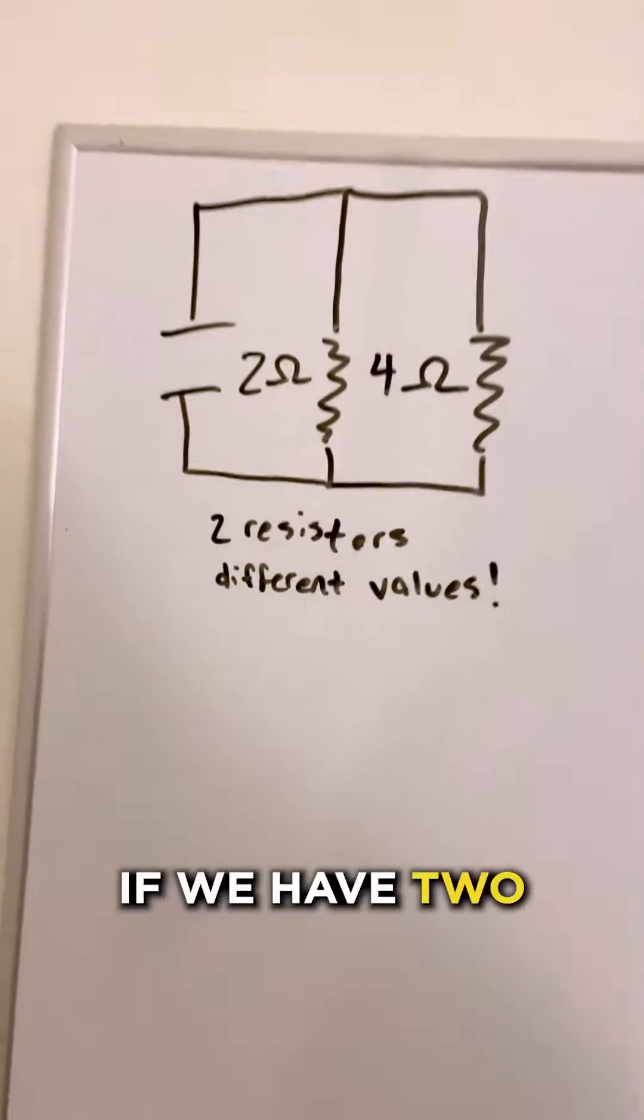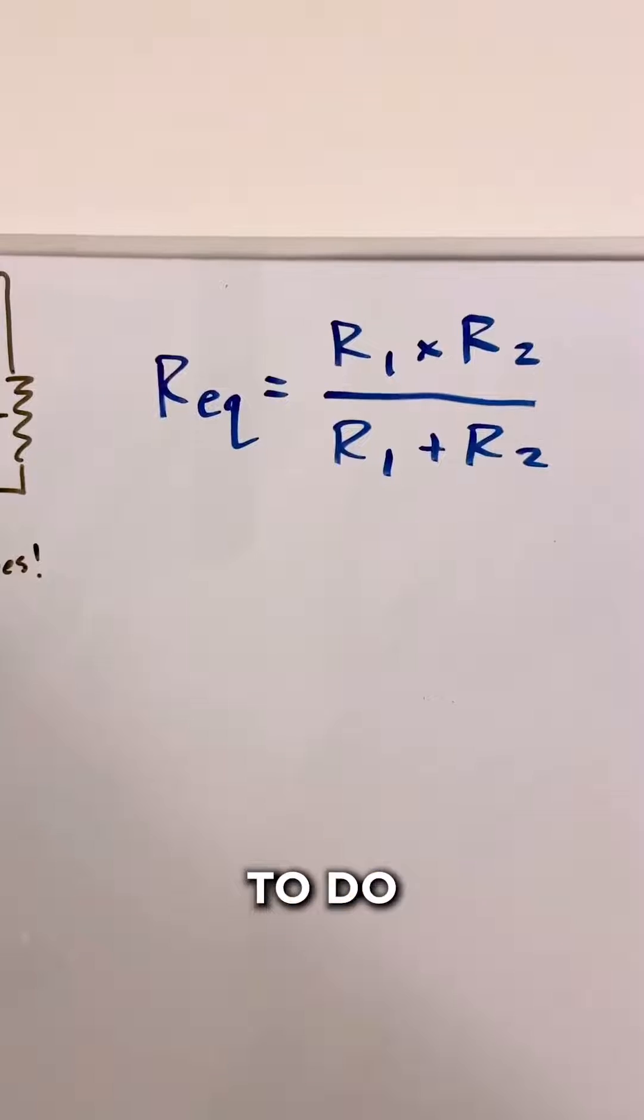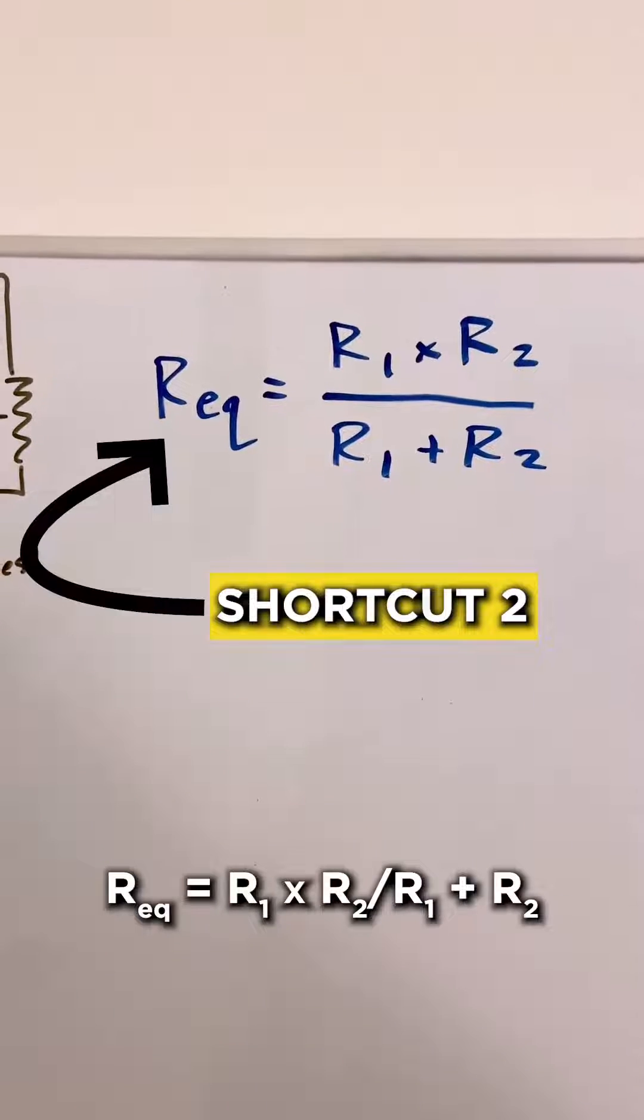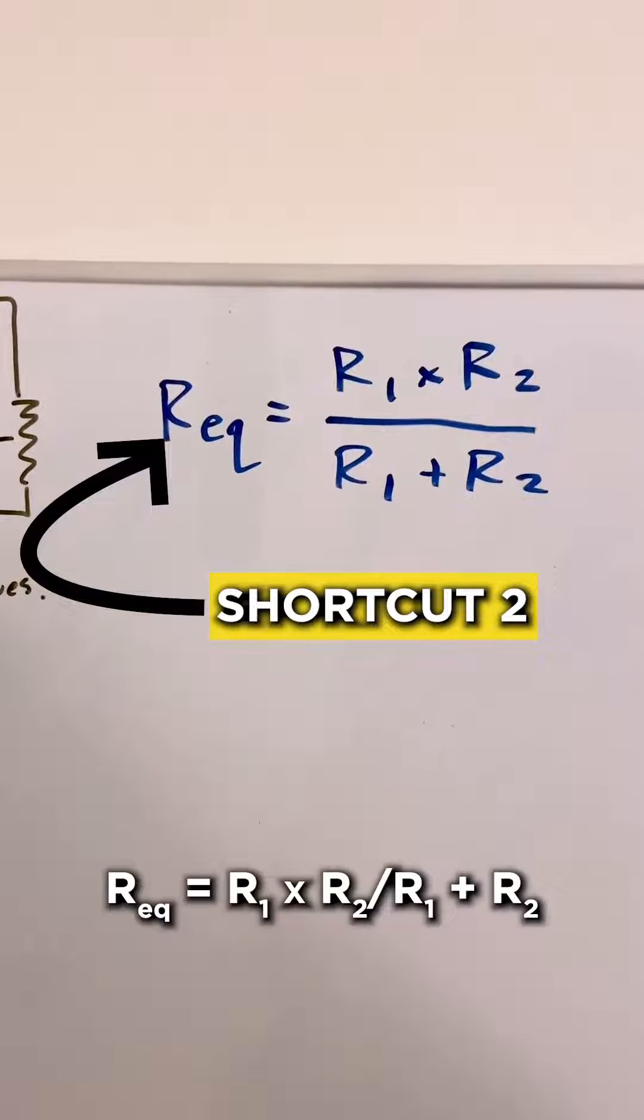We can also use this if we have two different resistors of two different values. All you have to do is the equivalent resistance is equal to R1 times R2 over R1 plus R2.